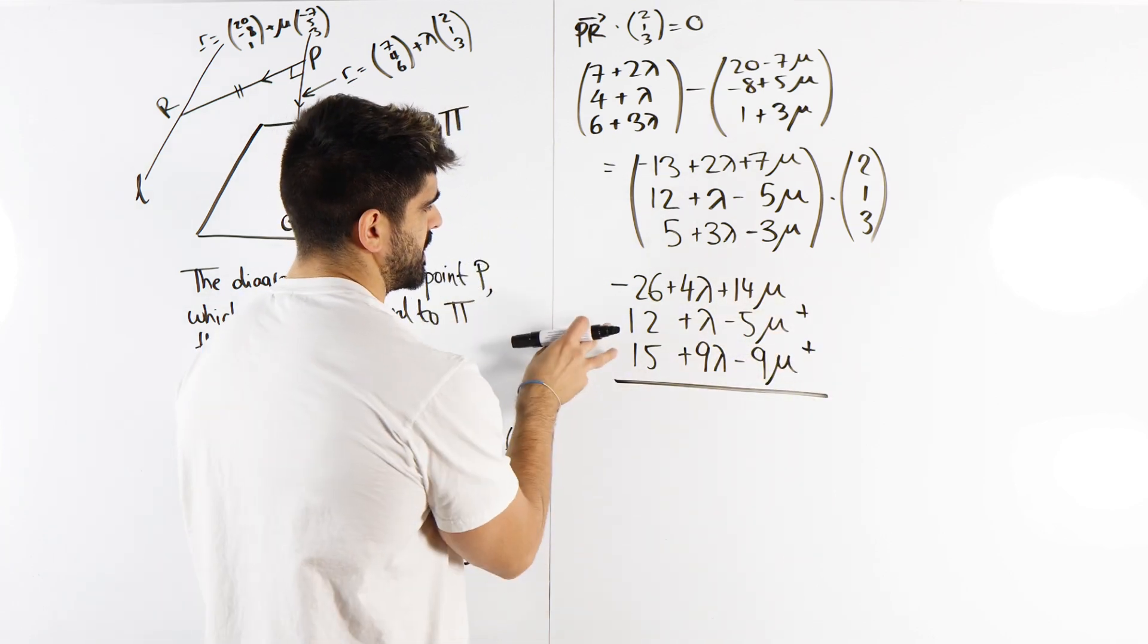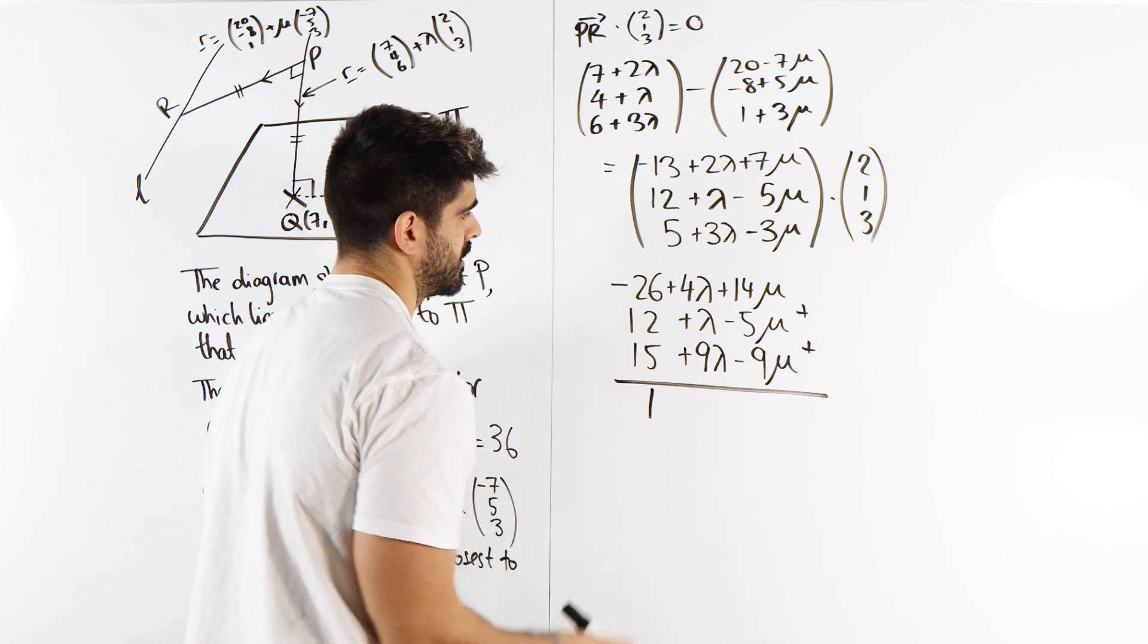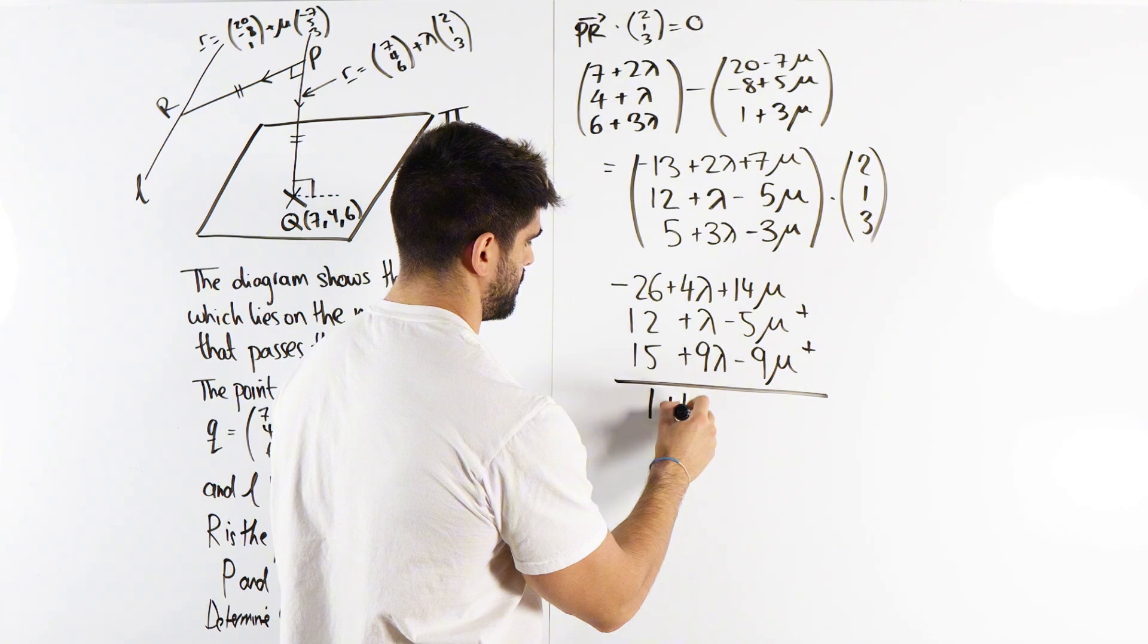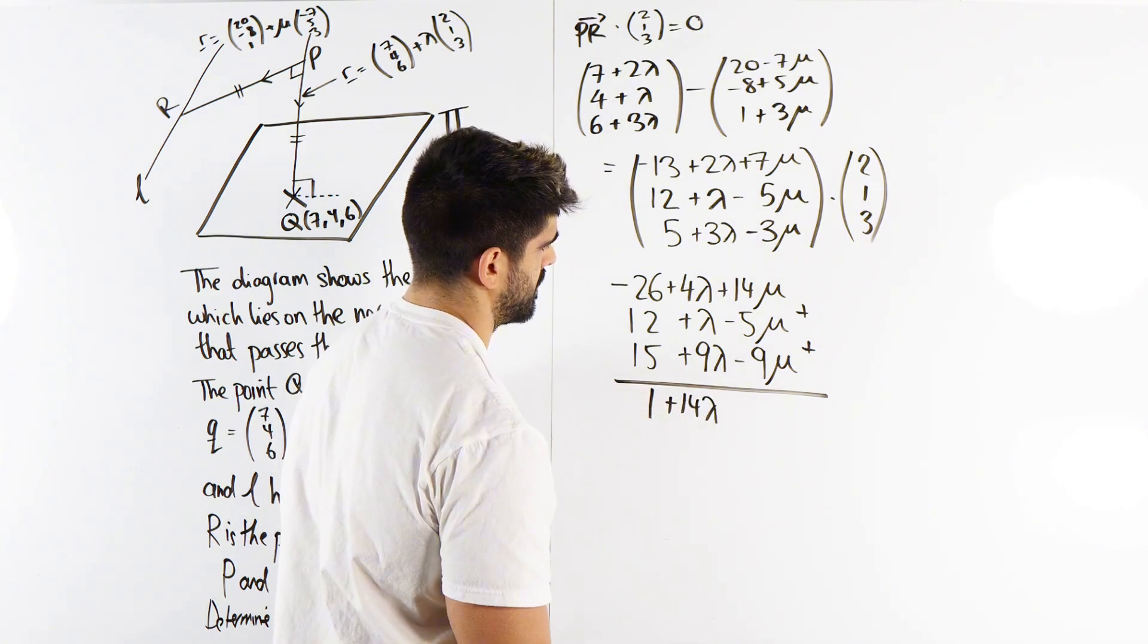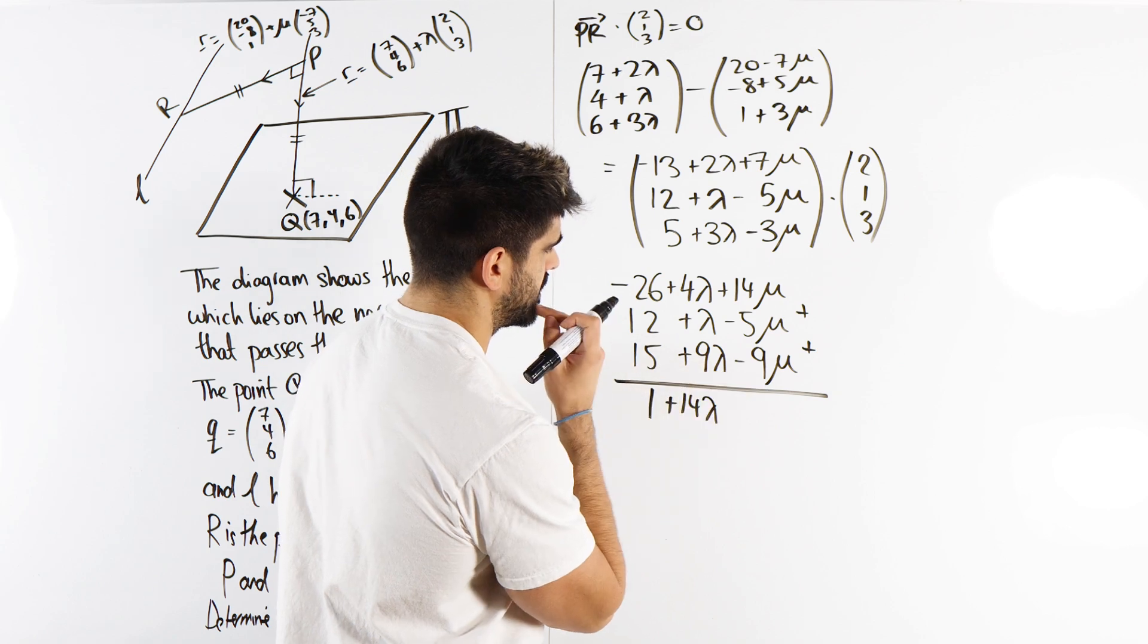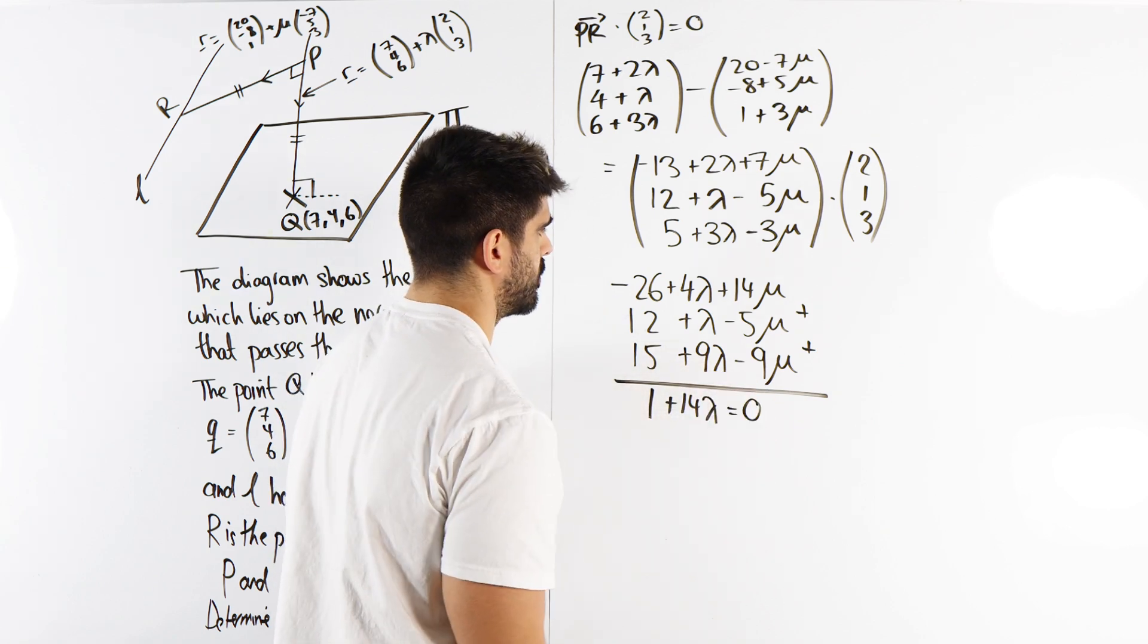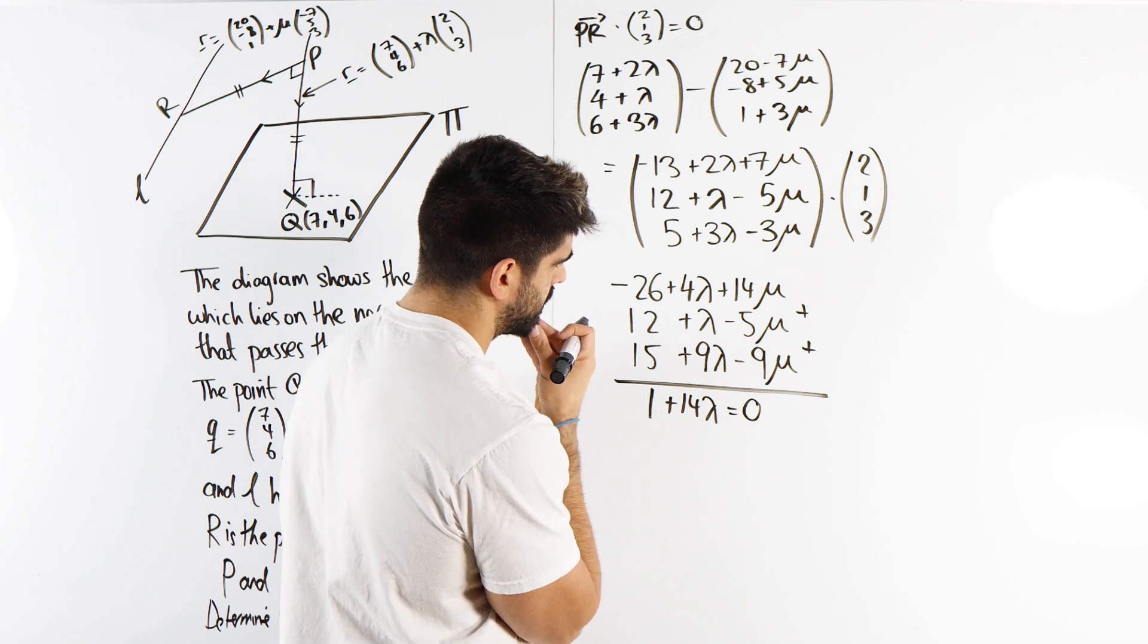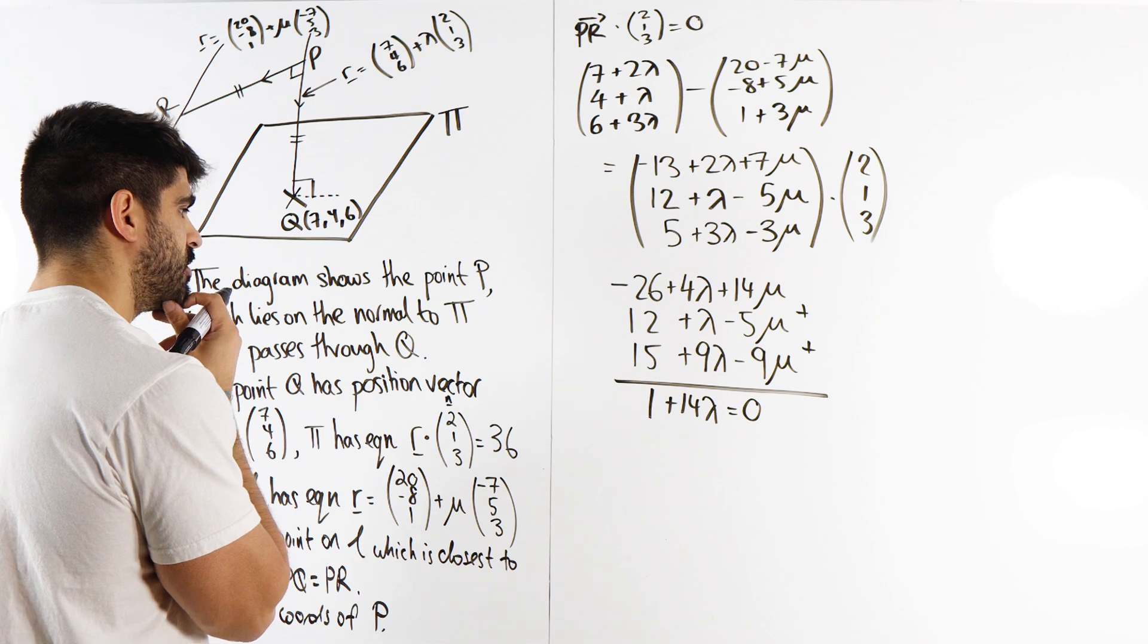Brave. 27 minus 26 is 1. 14 lambda. Wait, doesn't this all cancel? Yeah. Oh. So lambda is just minus 1 over 14.